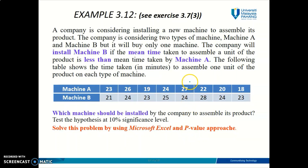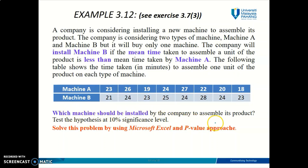This example involves two populations. A company wants to install a machine and is considering Machine A and Machine B. They will use Machine B if the mean time taken by Machine B is less than the mean time for Machine A. The following table shows the assembling time for both machines — these are two different populations, so this is the case of independent samples. The question is which machine should be installed? Test the hypothesis at 10% significance level, so alpha equals 0.10.